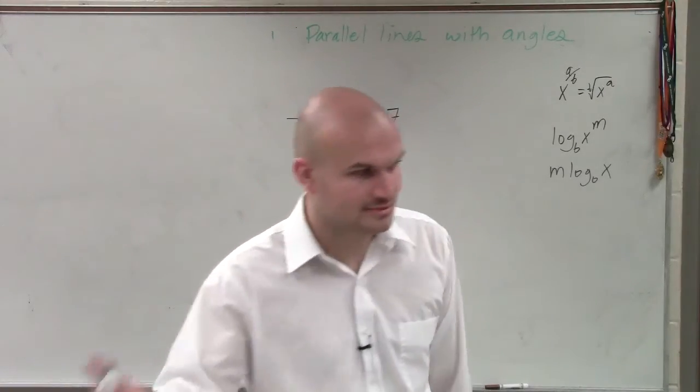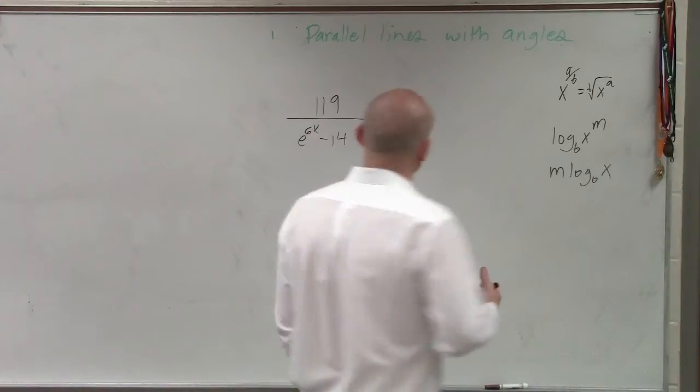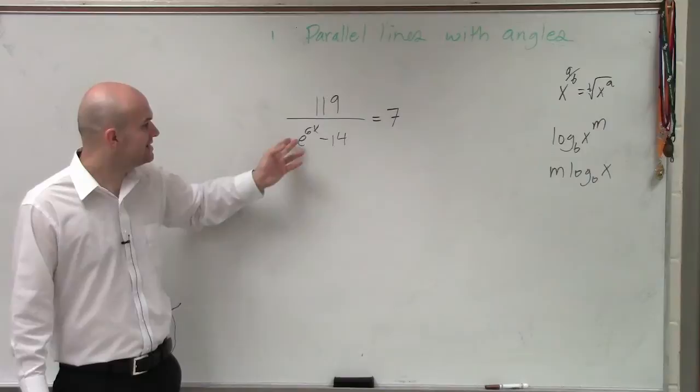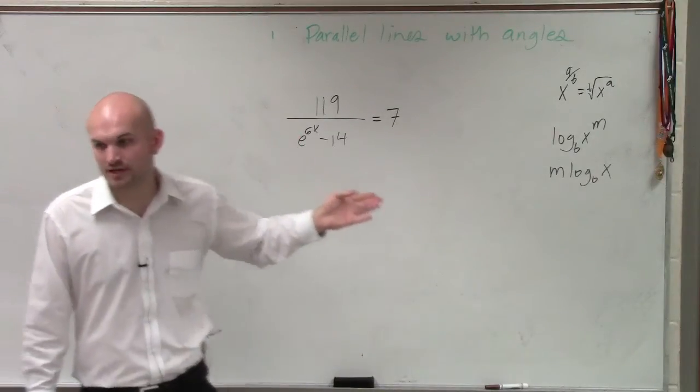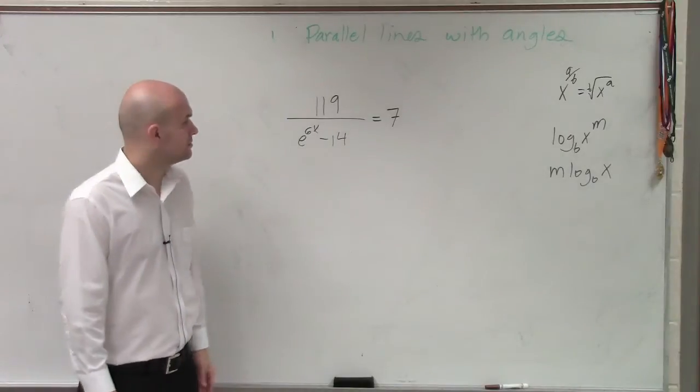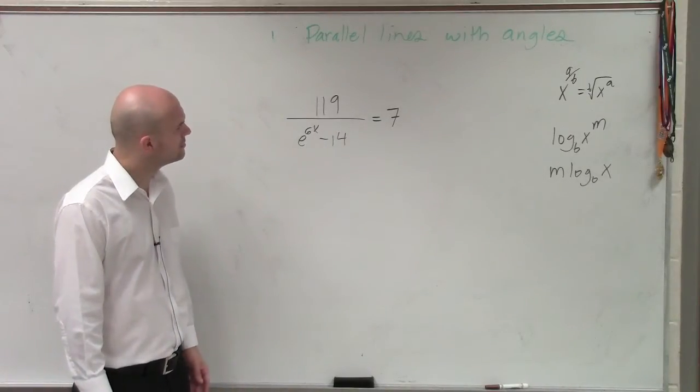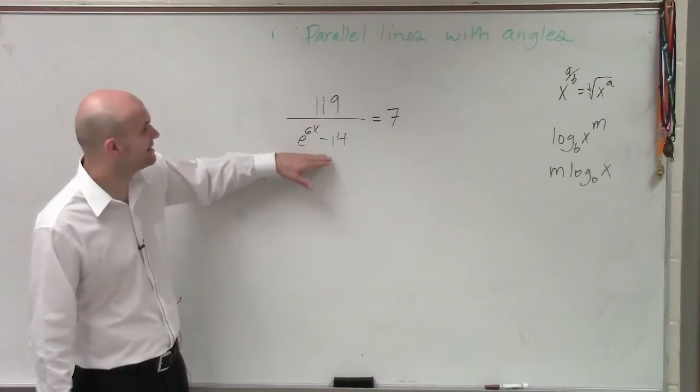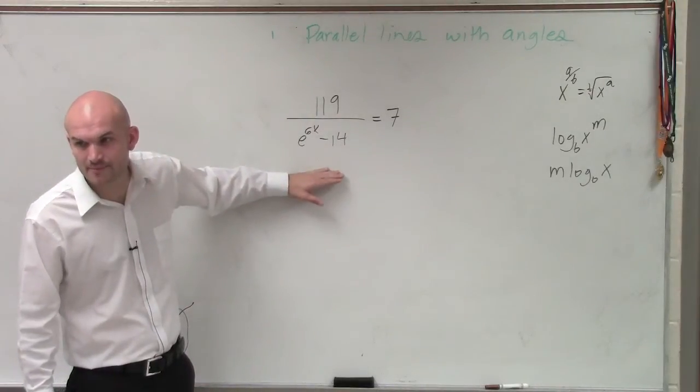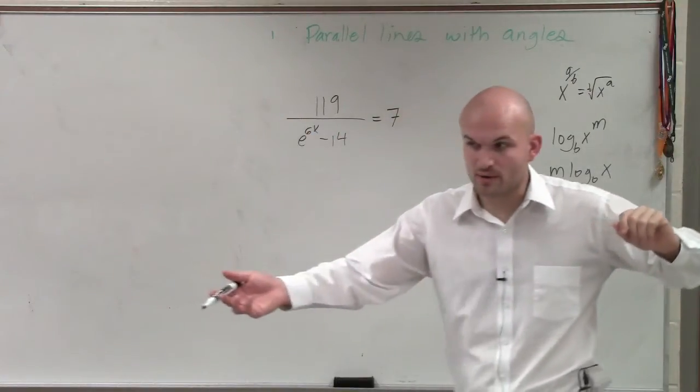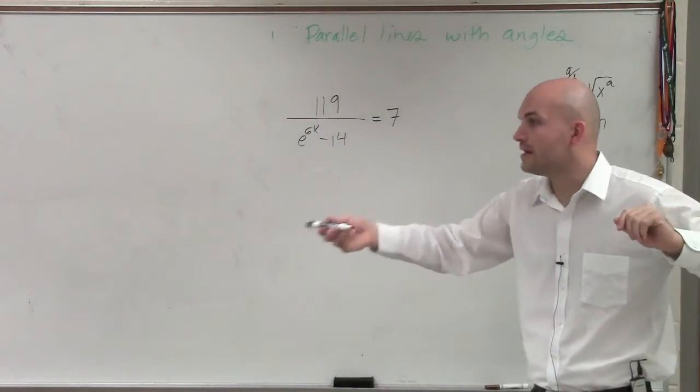Get rid of it. All right, so one thing we can do, how can we get rid of this denominator? How can we get rid of this e to the 6x minus 14? What can we do? What are you going to subtract? 119 minus 6x minus 14. But I need to get this off the bottom. How am I going to get this off the bottom? Oh, multiply it on both sides. You're going to multiply it by what?